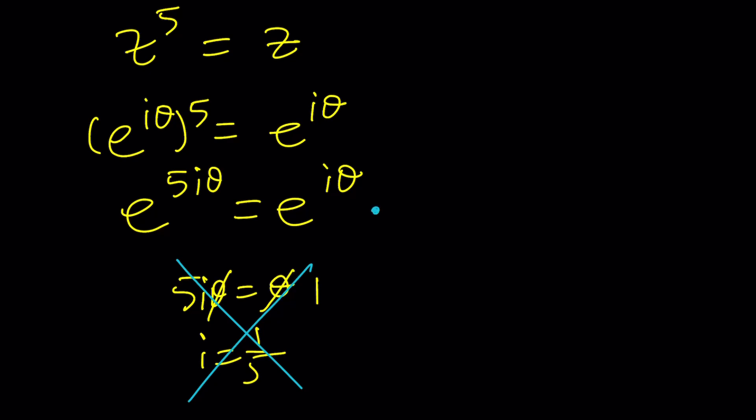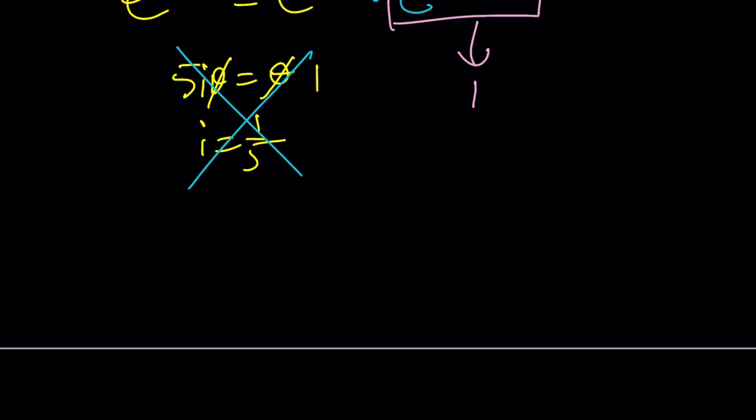Here's what you need to do. These angles are equal under certain conditions, right? We have to multiply the right hand side by a correcting factor, which is e to the power 2 pi n i. By the way, let me introduce you to 1 in the complex world. Meet 1 e to the power 2 pi n i. Now, let's go ahead and add the exponents. e to the power 5i theta equals e to the i theta plus 2 pi n i.